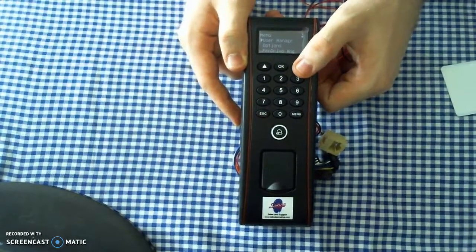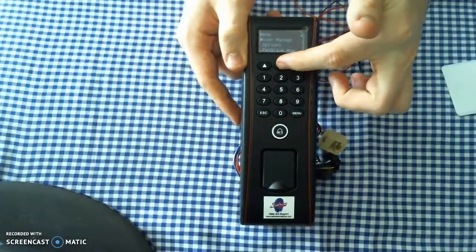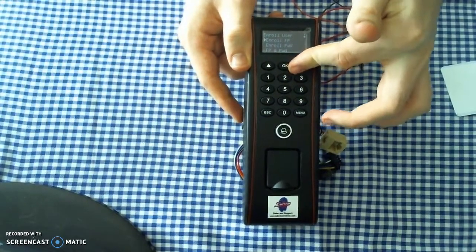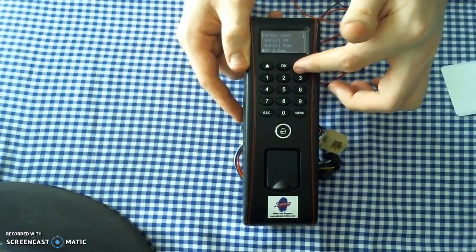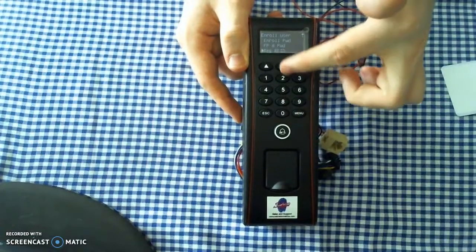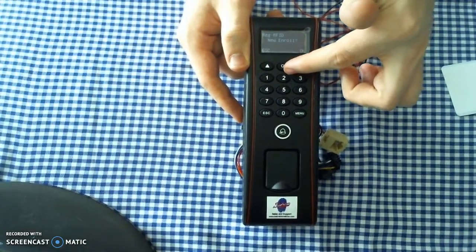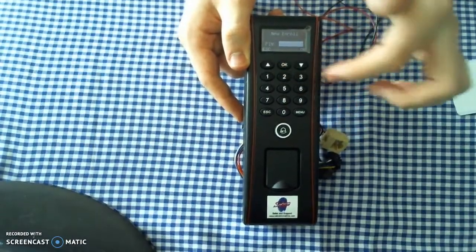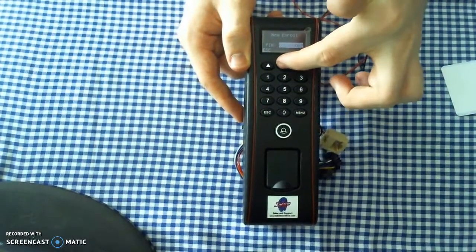From here, we can go to User Manage. We can say Enroll a User, then go down to New User. We'll say Register RFID card as well for this user specifically, a new enroll, and code 2. Then we'll say OK.